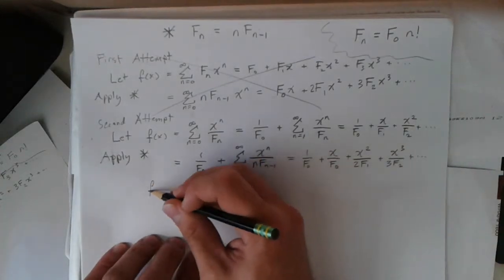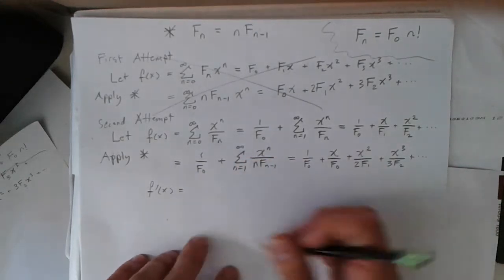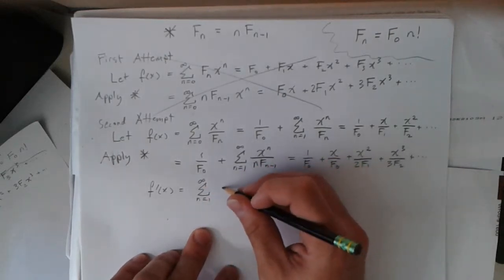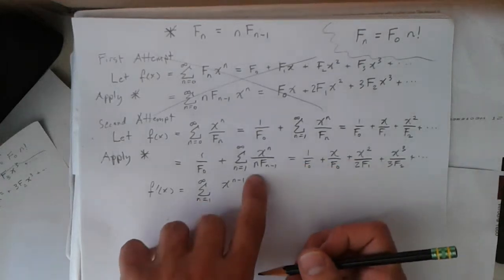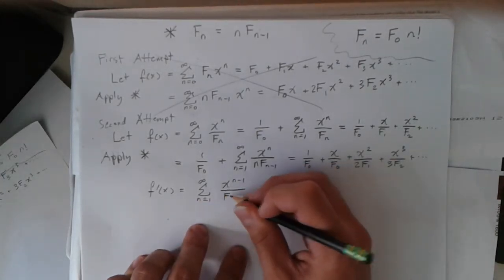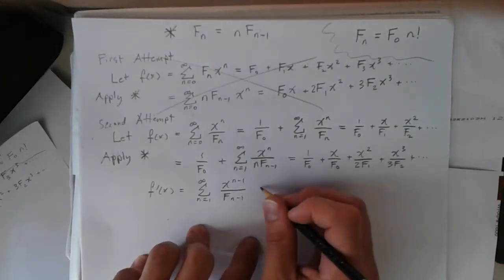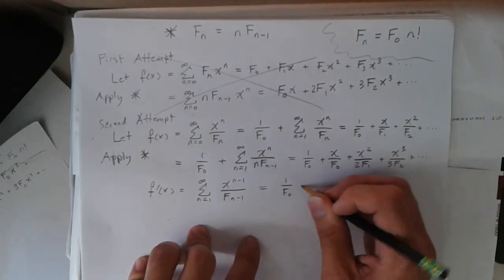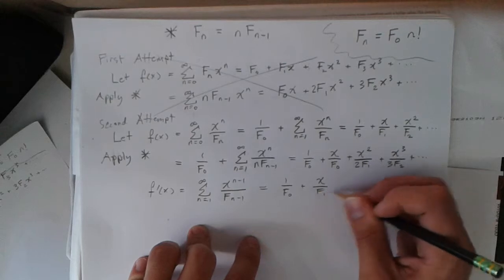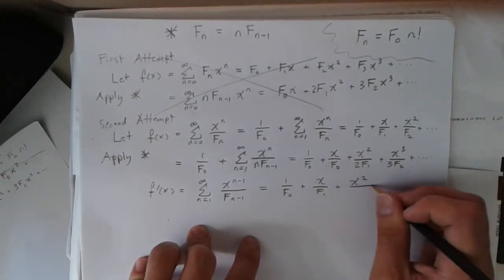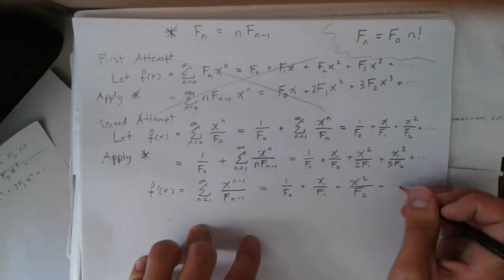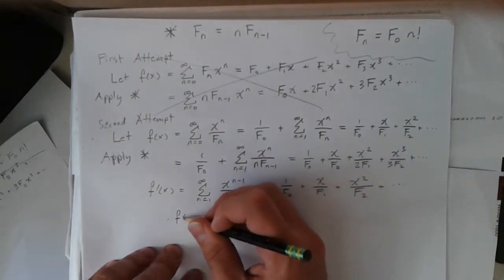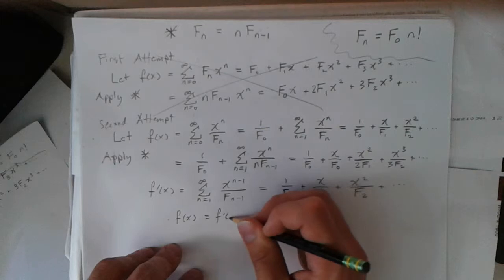Looking at f prime of x: the constant term goes away, leaving the series with x to the n minus 1, the n's cancel, and we're left with 1 over f sub n minus 1. Writing it out: 1/f₀ plus x/f₁ plus x²/f₂, etc. This is exactly my original series, so I get the differential equation f of x equals f prime of x.